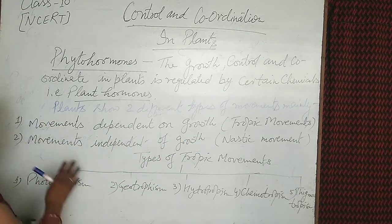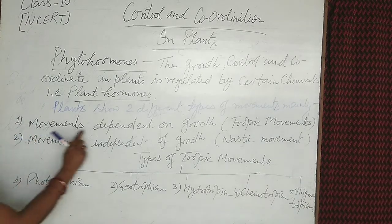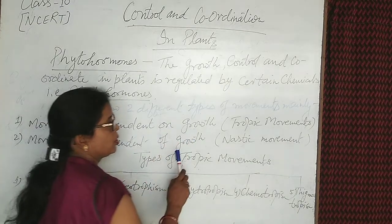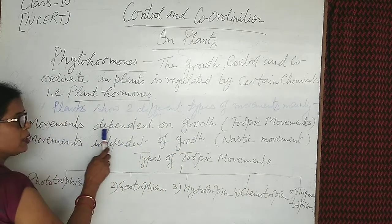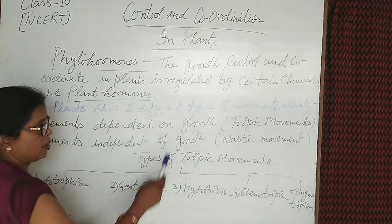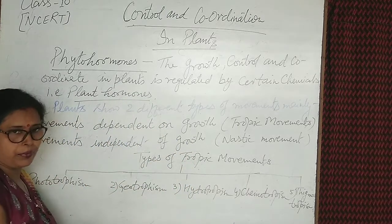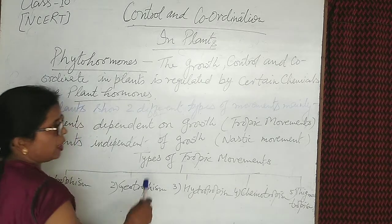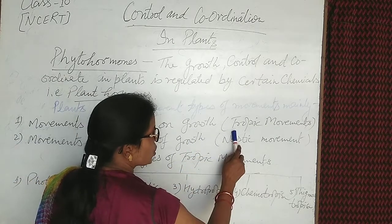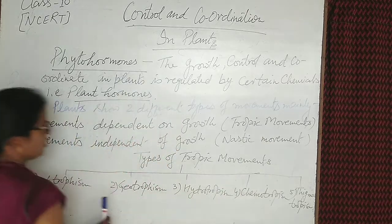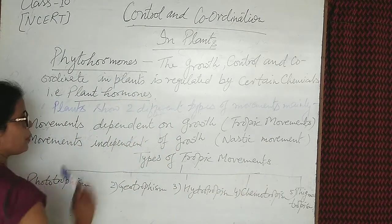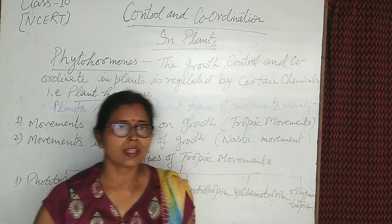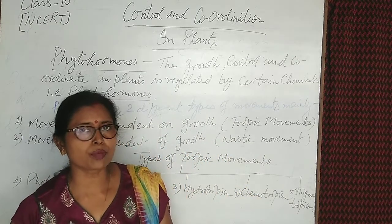The first type of movement is dependent on growth. A type of movement that depends on growth — the plant increases in length — is also known as tropic movement. Tropic movement depends on different types of factors like stimulus.